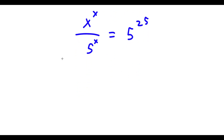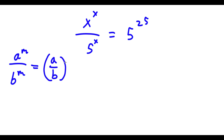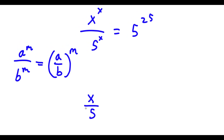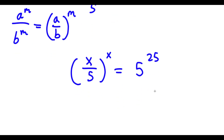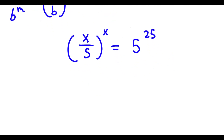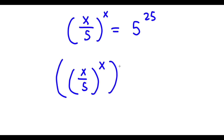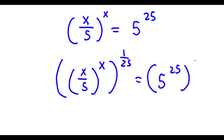Now, something in the form a to the power of m over b to the power of m equals a over b to the power of m. So x to the power of x over 5 to the power of x equals x over 5 to the power of x. This is equal to 5 to the power of 25. Now I'm going to take both sides to the power of 1 over 5, which gives x over 5 to the power of x to the power of 1 over 5, equals 5 to the power of 25 to the power of 1 over 5.